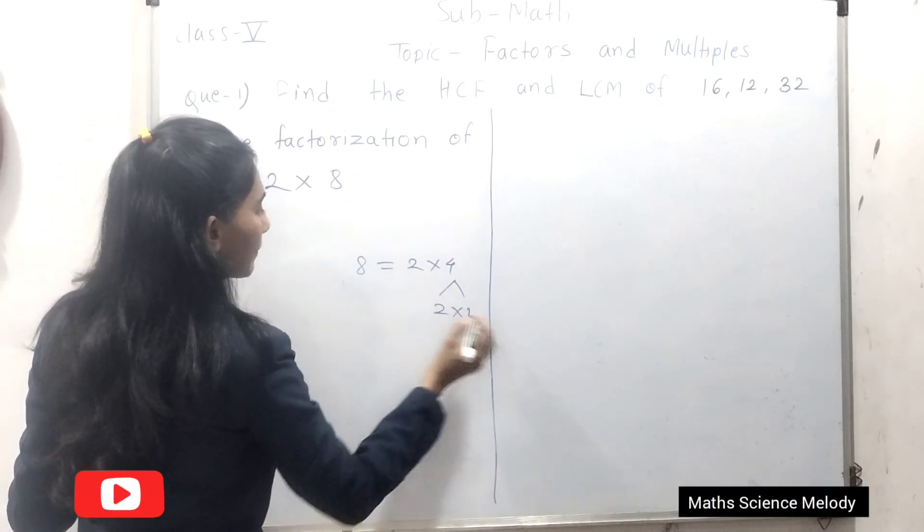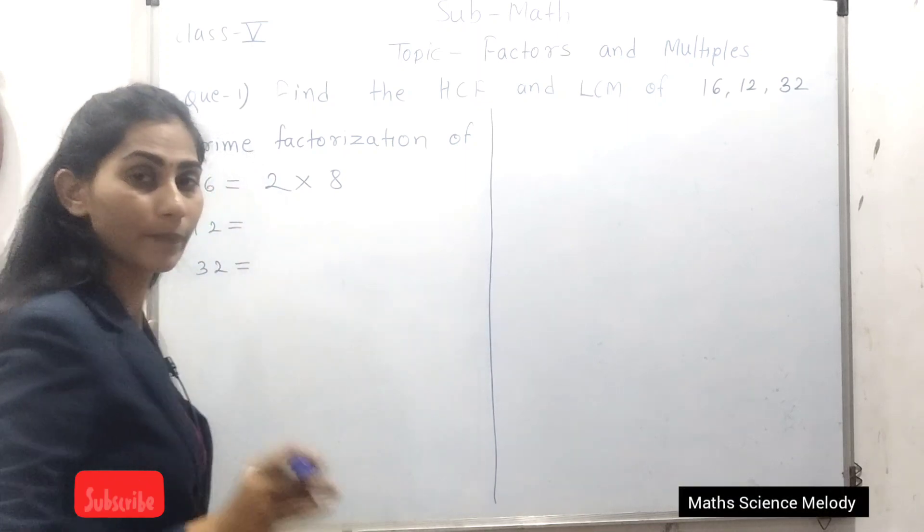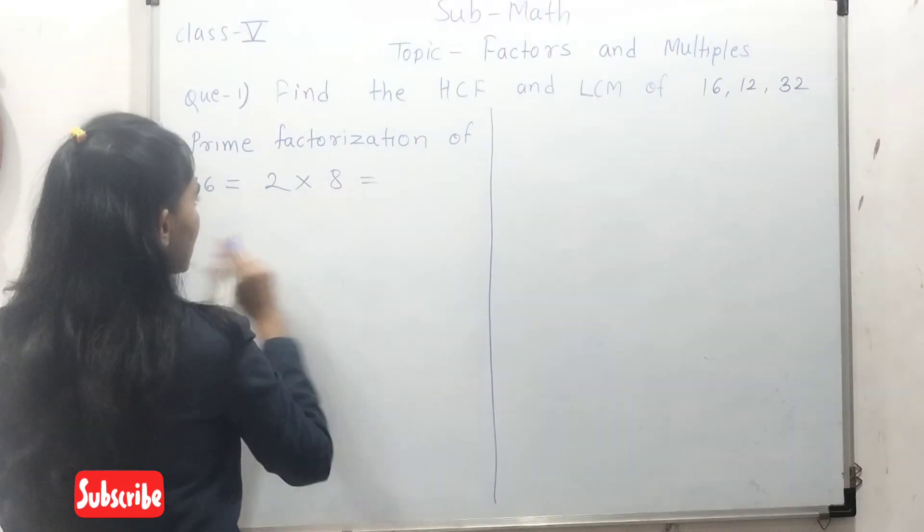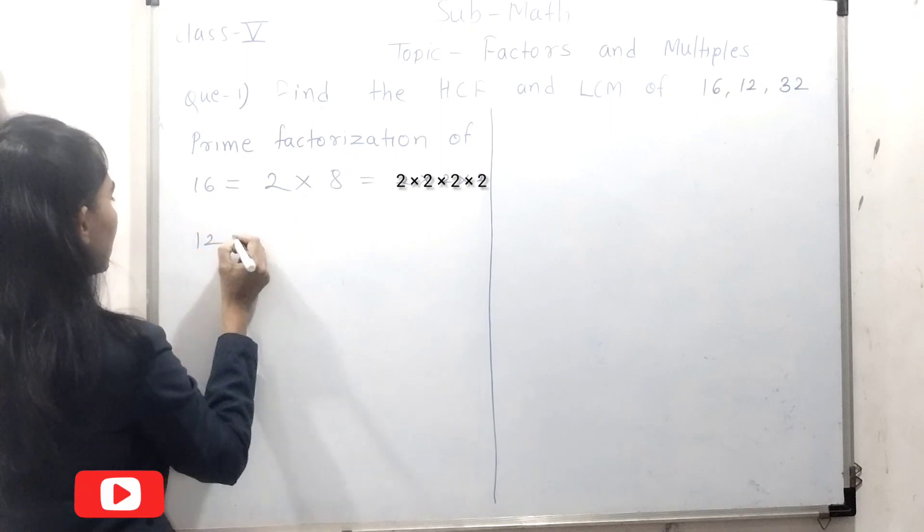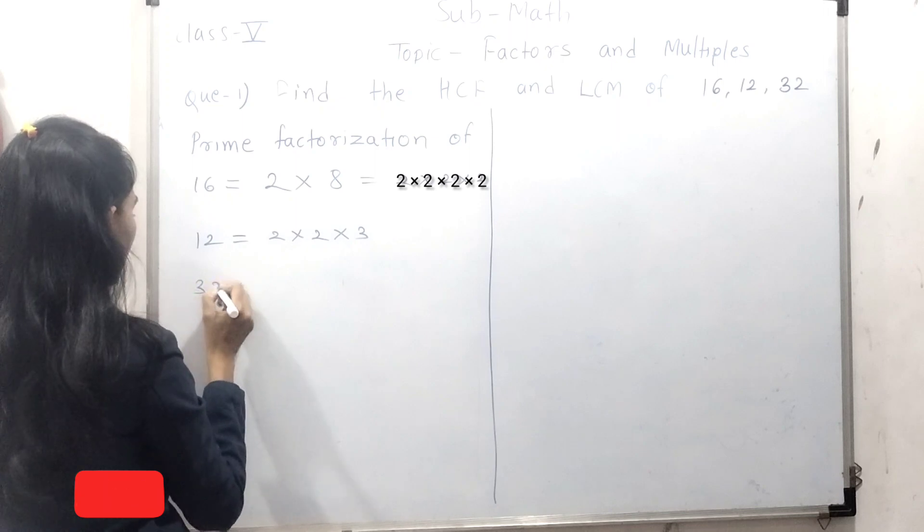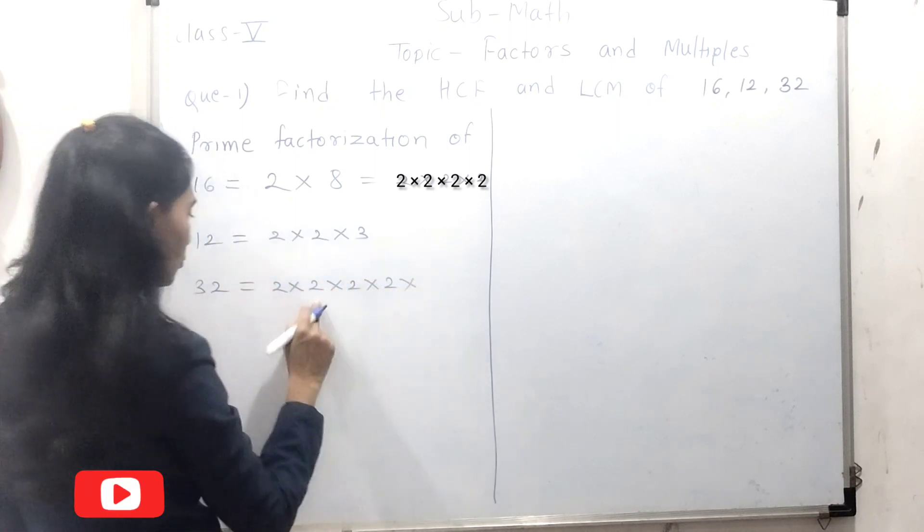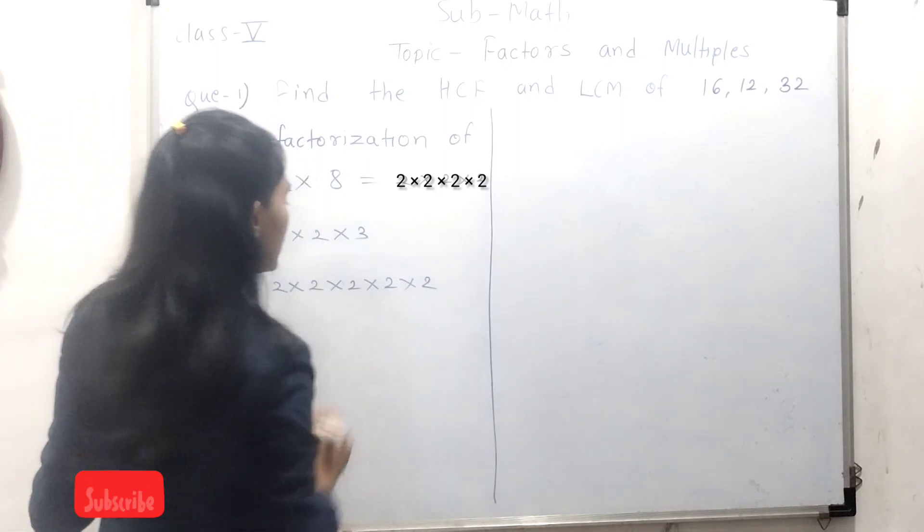And then you need to write this 2 multiplied by 2. Already in previous class, you have learned the concept factor tree. Same way you have to do here. All factors should be prime number. So, same way we will do for 12: 2 multiplied by 2 multiplied by 3. Here, then 32: 2 multiplied by 2 multiplied by 2 multiplied by 2 to the 4. 4 times 8, 8 times 16, 16 times 32.